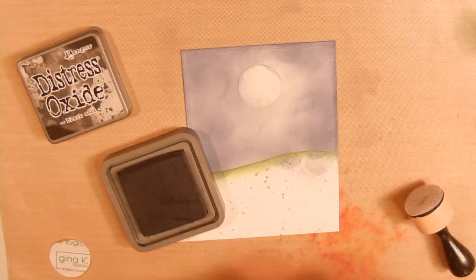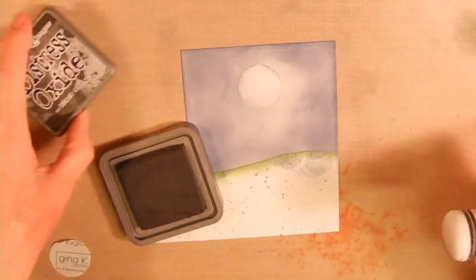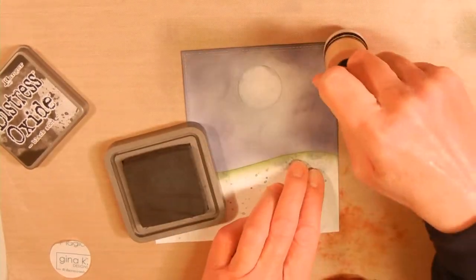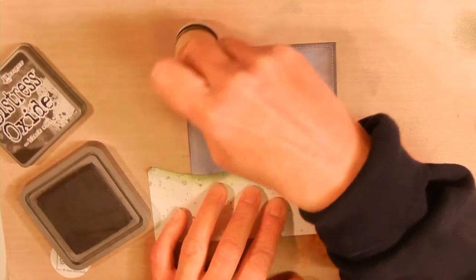After I get the blue pretty smooth and how I want it, I go ahead and add some Black Soot Distress Oxide ink. That's to make it look like a nighttime sky. I'm trying to keep the middle a little bit lighter so it looks like the light coming from the moon.